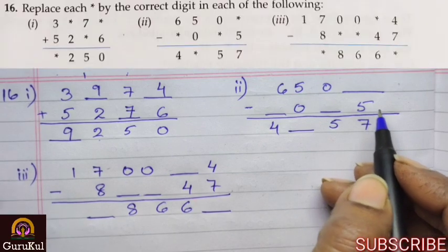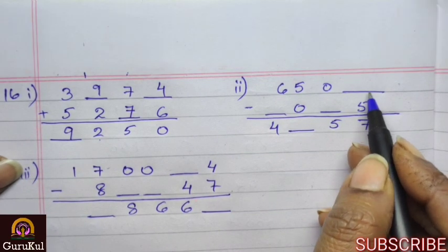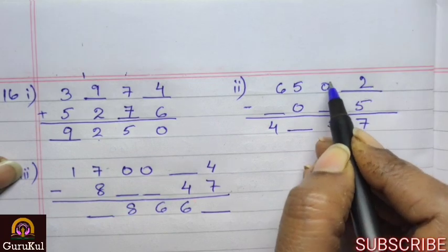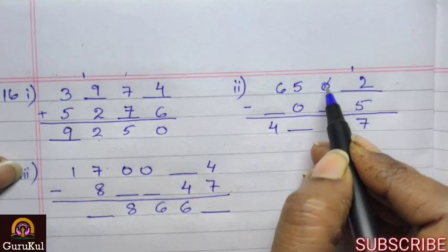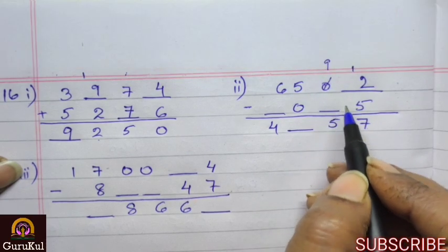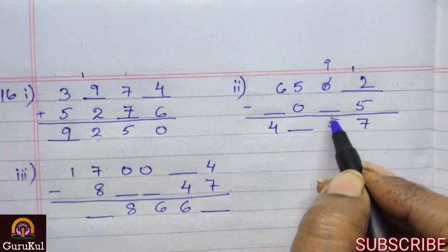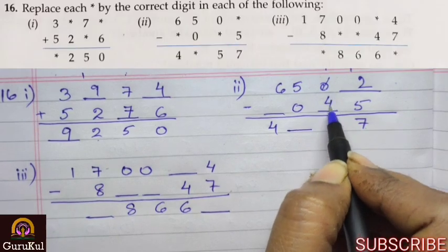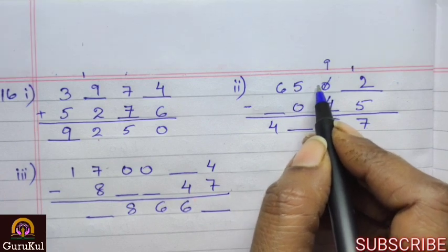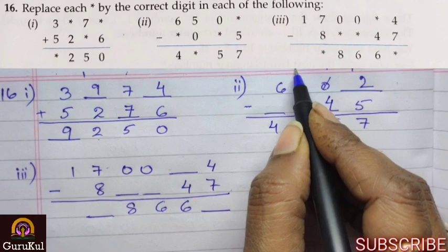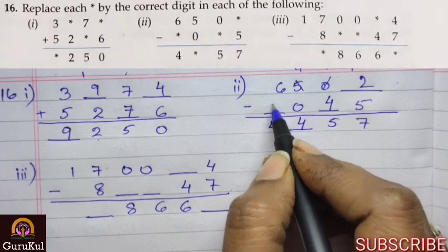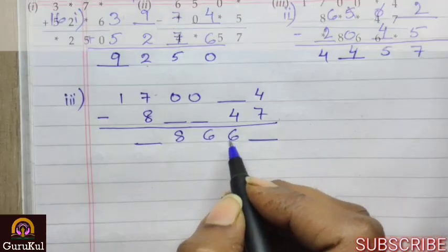Next one. Subtraction. 5 subtracted from a certain number gives us 7. So no doubt it will be 2, which will be borrowing 1 from the nearby number. And this will be reduced and be written 9. Now 9 minus what number gives us 5? No doubt it is 4. Now 5 has given 1 to the 0 in order to make it 10. So it becomes 4. 4 minus 0, 4. And here 6 minus 2 will give us 4.